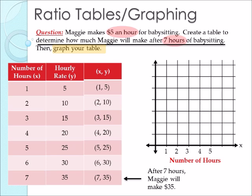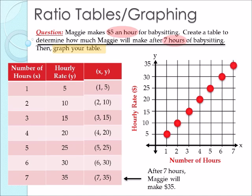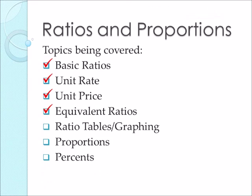To graph these points, we first need to look at our x-axis. The first point is (1, 5), so we look at 1 on the x-axis — the horizontal axis — and go up 5. Our next point is (2, 10), so we look at 2 on the x-axis and go up 10. For 3 hours it's $15, so our next point will be there, and so on and so forth. This covers ratio tables and graphing.